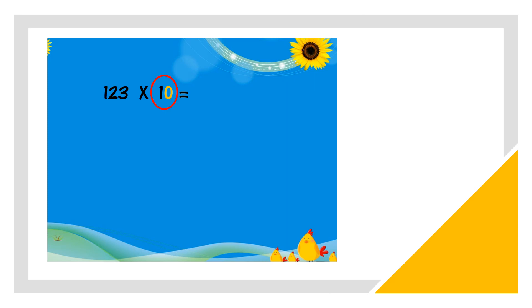After that, we copy the number, copy back the number, salin semula nombor di depan: 1, 2, 3. Then, look at 10. How many zeros? 10 ada berapa sifar pada 10? 1 zero, right? So we add 1 zero at the back. Tambahkan 1 sifar di hujung.